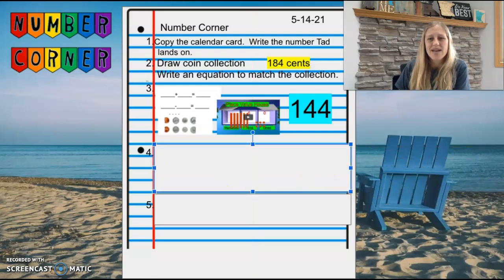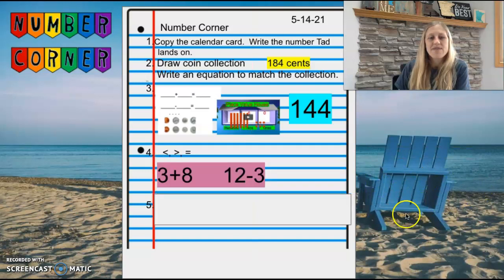We are heading to number four. For number four, you are going to put a less than, greater than, or equal sign in between these two equations. We have 3 + 8 and 12 - 3. So again, in the middle right here, will you put a less than, greater than, or equal sign? Press pause if you need more time for number four.